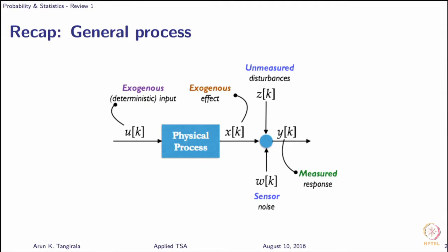As engineers, we are generally concerned about the physical process - that is, we would like to have a model of it - and the typical approach is to look at the so-called input-output data. The input is represented by U, you can call it a cause, and then there is a response X based on this input U. Unfortunately, we do not have access to X because we use a sensor, and on top of it there are effects of uncontrolled or unmeasured disturbances, so ultimately what you have with U is what is denoted by Y. In time series analysis, the scenario is slightly different - in fact quite different.